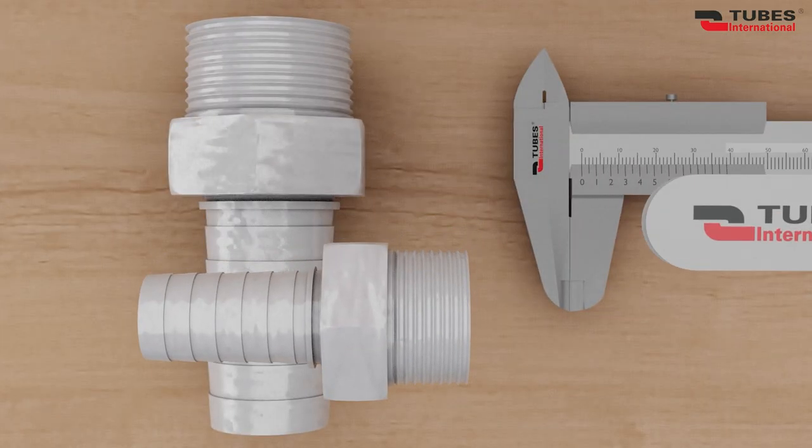Now that we know the diameter, let's measure the thread pitch with the gauge. Thread pitch is the distance between adjacent turns. Make sure that the gauge aligns perfectly with the thread for accurate measurement.